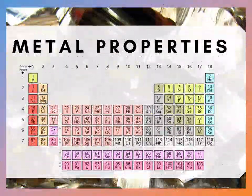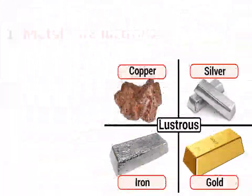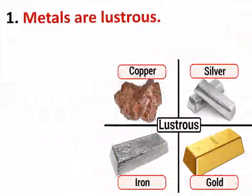First of all, we learn about the physical properties of metals. 1. Metals are lustrous because of the free electrons they have. The free electrons can move freely in the metal, causing any light incident on them to get reflected.